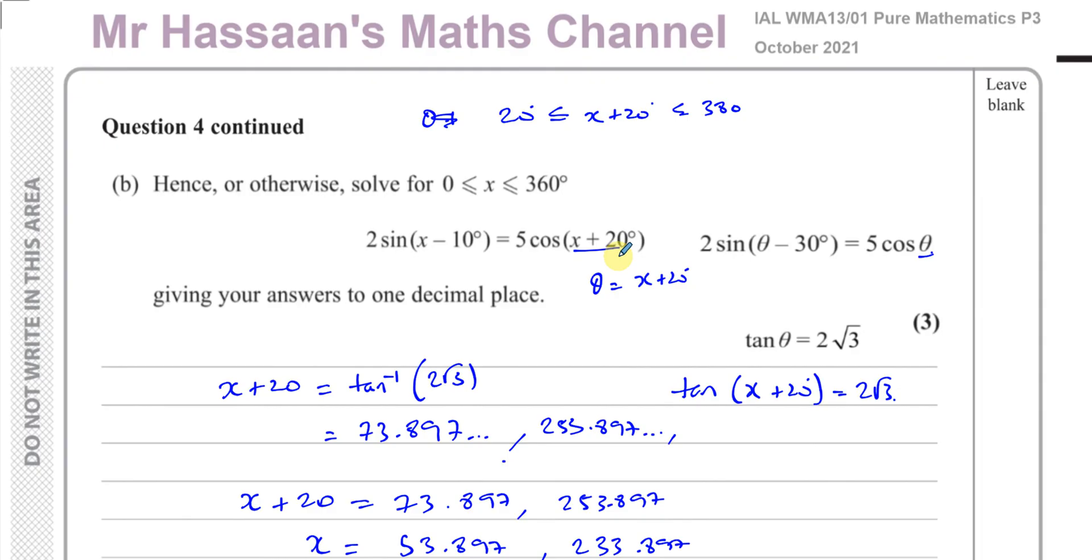This is question number four from the October 2021 paper P3. Other questions from this paper can be found in the playlist that should appear in this area. Other questions from the topic of trigonometry and trigonometry identities from P3 can be found in this area over here. You can subscribe to my channel by clicking on this link. Thank you for watching and see you soon.